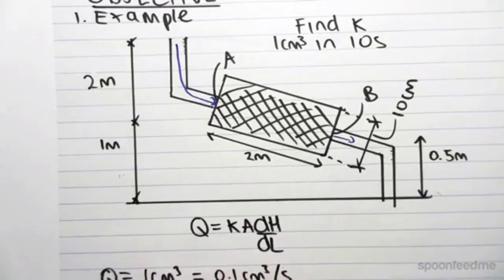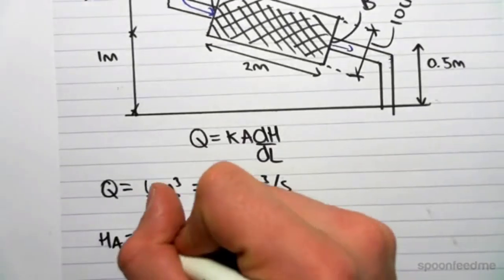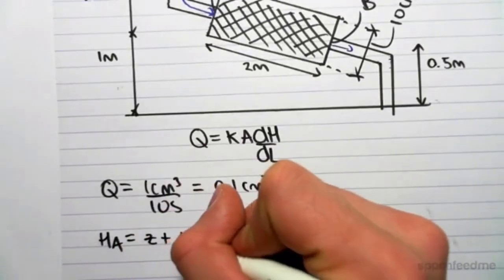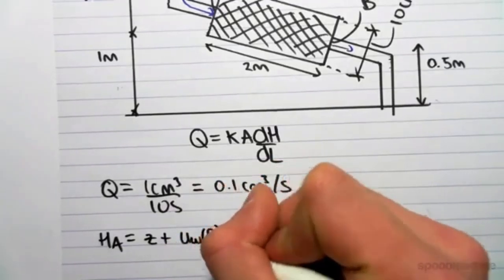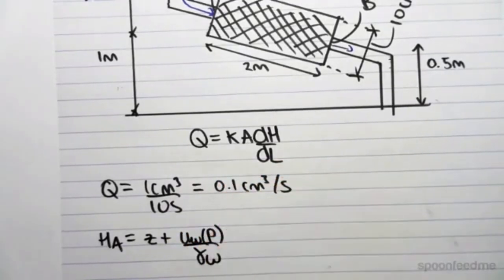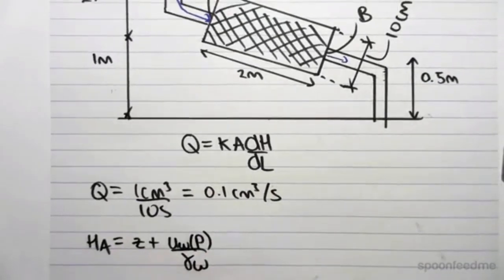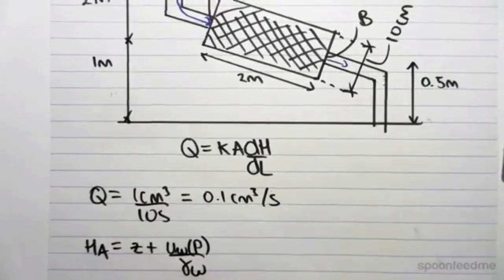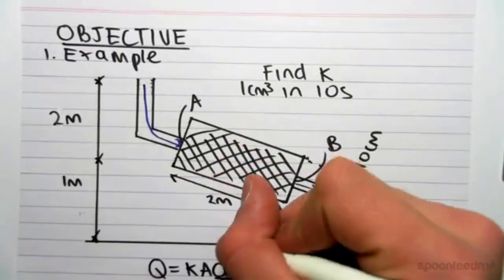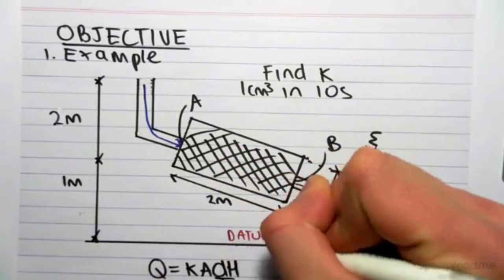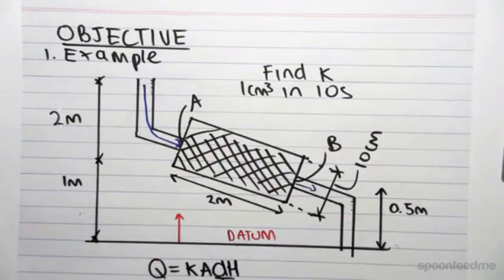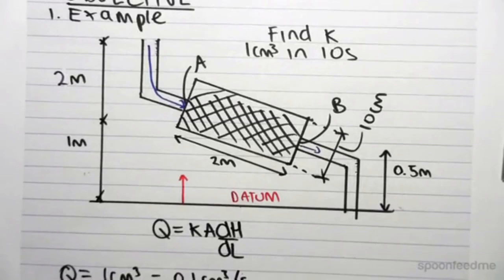So the head at point A. We know head equals z plus the pore water pressure over the gamma of W, over the unit weight of water. So before we even start, we have to define a datum. So let's put our datum at the bottom here. It's just convenient to do that because we're given all the values going to this base.